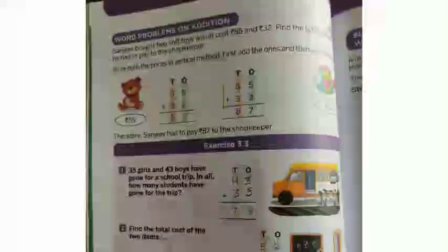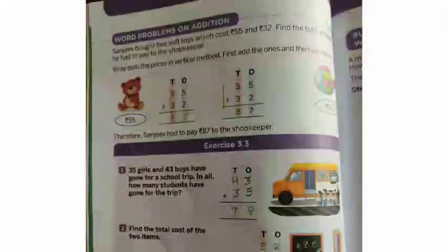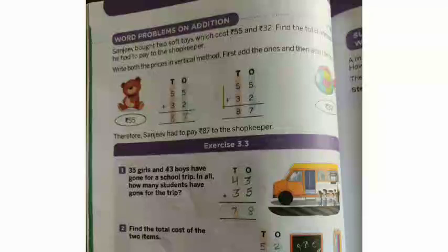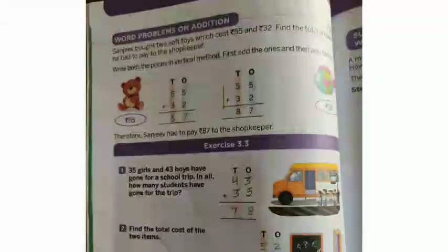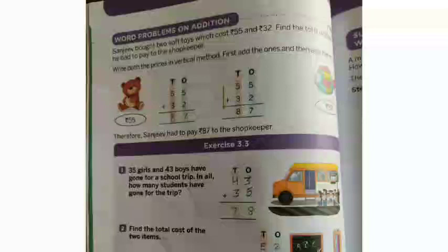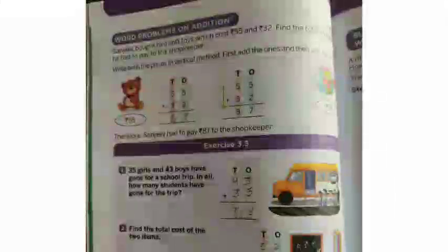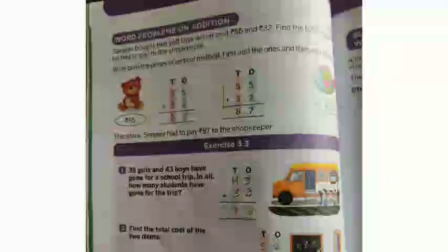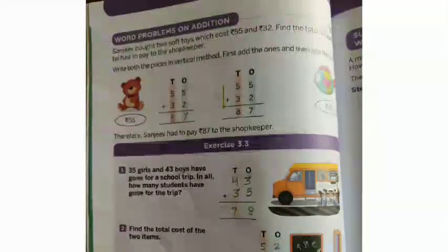Word problems on addition. Sanjeev brought two soft toys which cost 55 and 32 rupees. Sanjeev purchased two toys, one price is 55 and the other 32. Find the total amount he had to pay to the shopkeeper. How much will he pay the shopkeeper? First 55. Now we should know what we have to do. How much do we have to pay? One toy's price is 55 rupees, second price is how much? 32. So we write this, and put the addition sign.